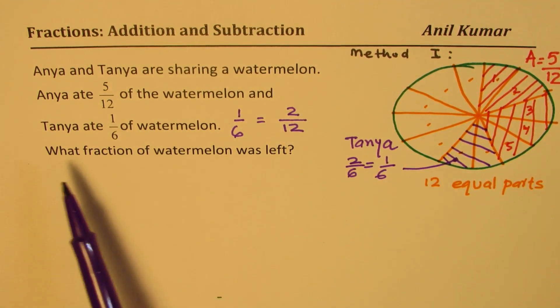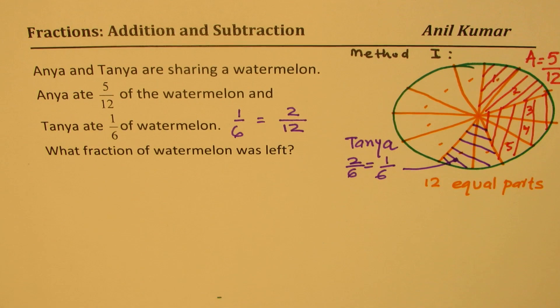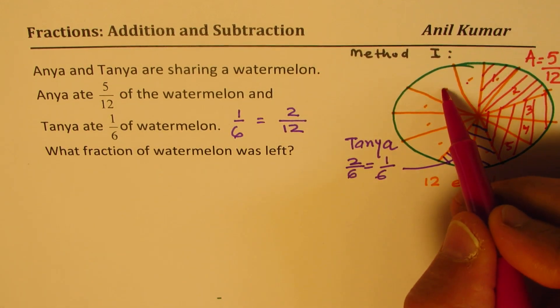Now, the question is what fraction of watermelon was left. Well, now you can count. You have 1/12th, 2/12th, 3/12th, 4/12th, 5/12th.